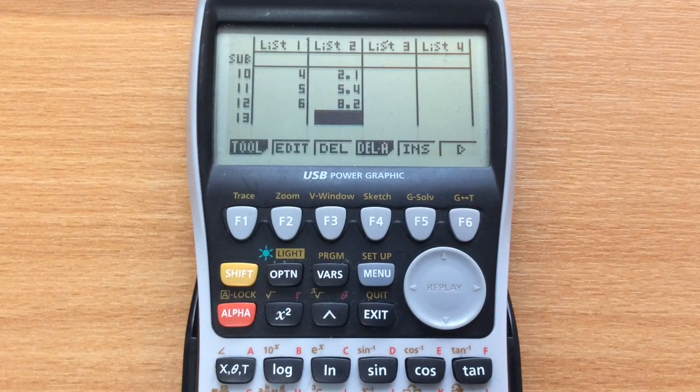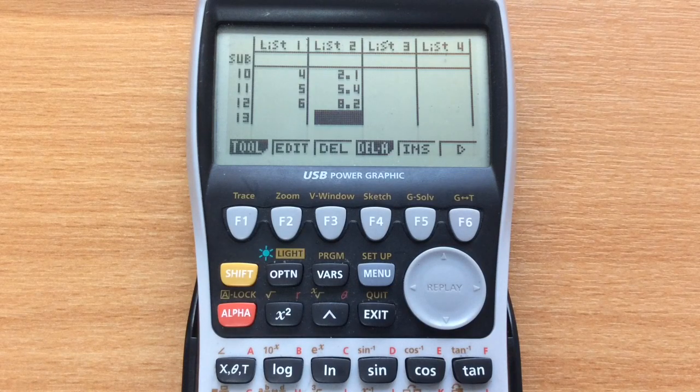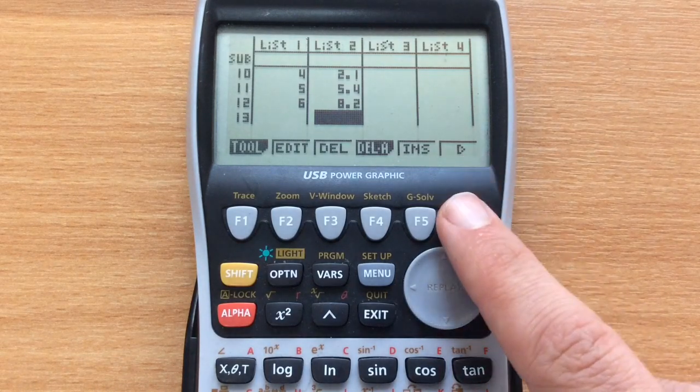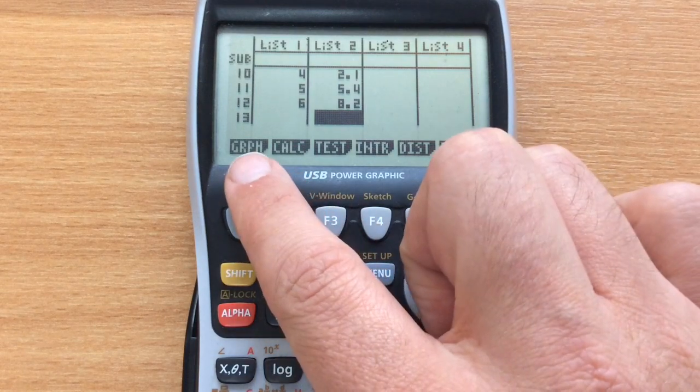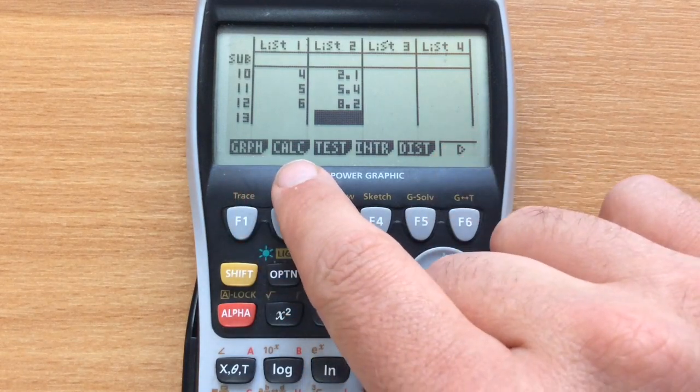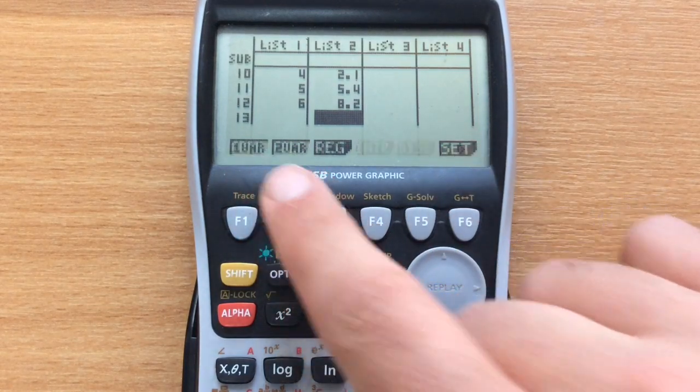When you've got all of your data in, we need to get back to the mode where we can do any calculations with it. Pressing the arrow again, we can get back, we can draw graphs and things, and we can do calculations based on it.